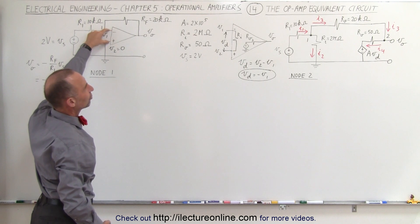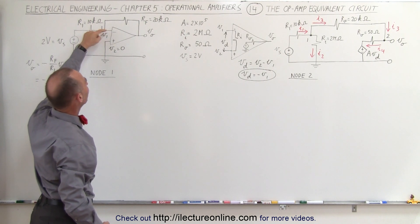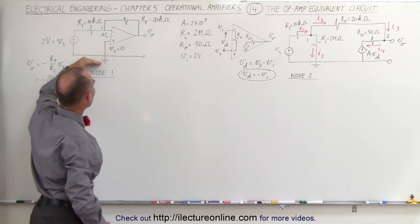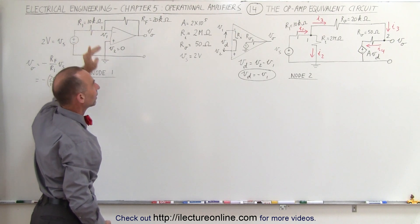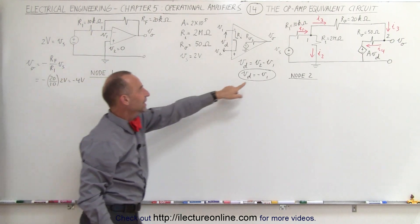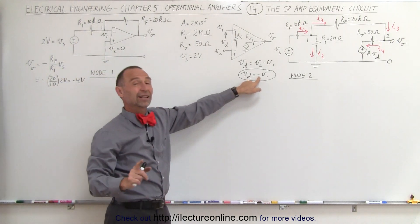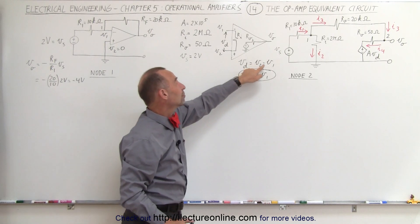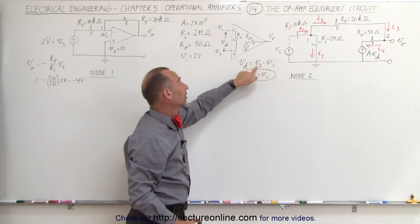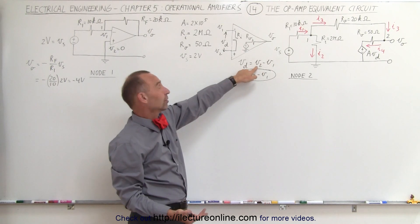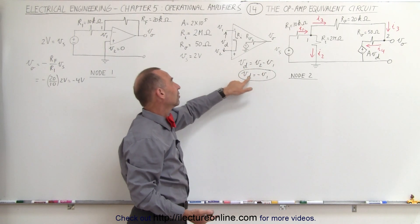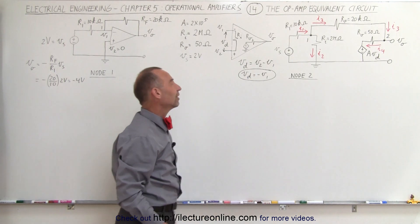The voltage difference V_D equals V_1 because it's really the difference between ground and V_1. We also have a negative sign since V_D = V_2 minus V_1. Because V_2 equals zero, we can say V_D equals minus V_1.